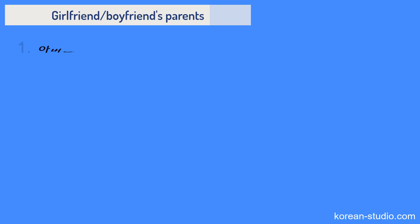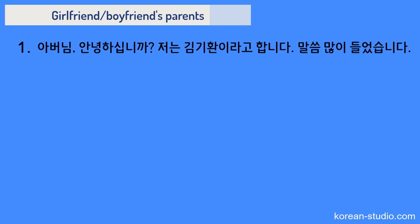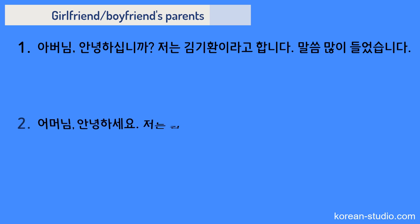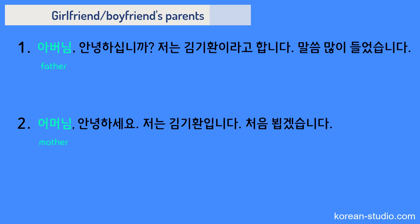Let's now look at how to introduce yourself when meeting your boyfriend or girlfriend's parents. Examples include: 아버님 안녕하십니까. 저는 김기환이라고 합니다. 말씀 많이 들었습니다. And: 어머님 안녕하세요. 저는 김기환입니다. 처음 뵙겠습니다. We can address them as 아버님 and 어머님, which is standard in Korea, and use either 안녕하십니까 or 안녕하세요 to say hello.